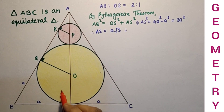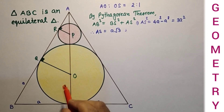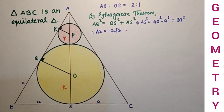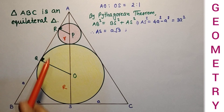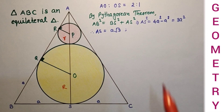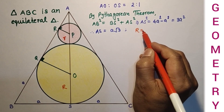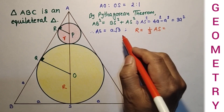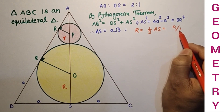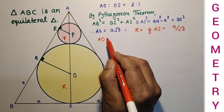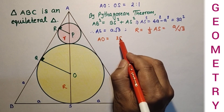Let the radius of the larger circle OS be big R, and the radius of the smaller circle be small r. Since AO to OS is 2 to 1, OS is one third of AS, so big R equals A root 3 divided by 3, which equals A upon root 3. And AO equals two thirds of AS, so AO equals 2A upon root 3.